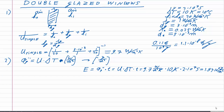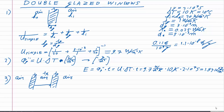Moving on to question 3, we talk about the double glazed window. Starting with a drawing: air on the outside, then a window pane, then an air layer on the inside, then another window pane, and then air on the inside of the building. We label lambda_G for the glass of both panes, lambda_A for the air layer in between, D_A for the thickness of the air layer, and D_G for the thickness of the glass panes.